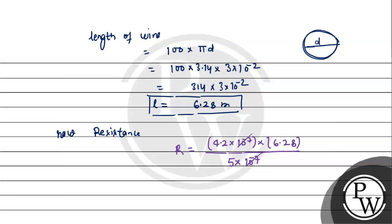The 10^-7 cancels out. Multiplying 4.2 × 6.28 gives 26.376. Dividing by 5 gives us the resistance value.